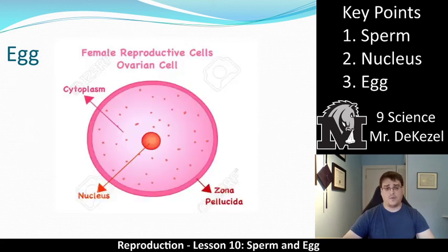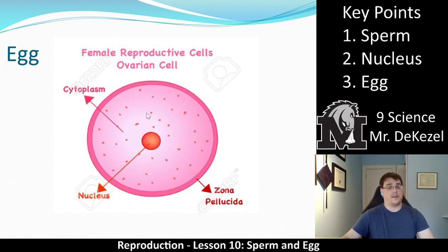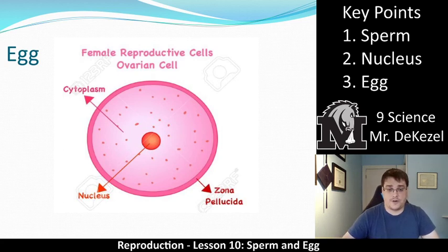The nucleus is generally somewhere in the center. The idea is that the sperm approaches, hits the side of the egg, the acrosome blows up the outer layer — the zona pellucida — which allows the nucleus to be propelled in towards the female's nucleus. They then combine, and you have a zygote. That is the process.